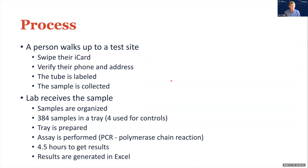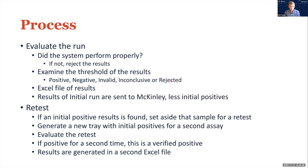So what does the process look like? You walk up to the test site, swipe your ID card, verify your phone, address, and name. A label is printed and placed on the tube, and you collect your sample. Once the samples are organized in the lab, the tray is prepared, the assay is performed, and it takes about 4.5 hours to get results. That 4.5 hours involves a lot of manual organization, checking of data, creation of spreadsheets, transferring samples from large tubes to wells inside the tray — really a tremendous amount of work.